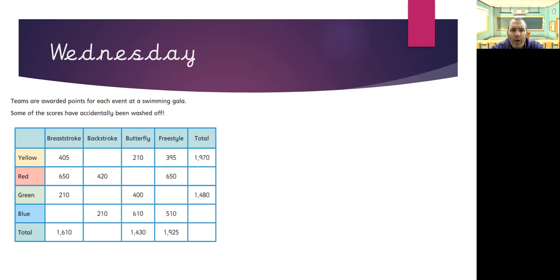Our reasoning question for today. So we need to look carefully at how we've solved what goes into the missing gaps. So we're going to start with looking at this missing number here. I have enough information in this row to work out what it is. I know the total for my row. That's 1,970.